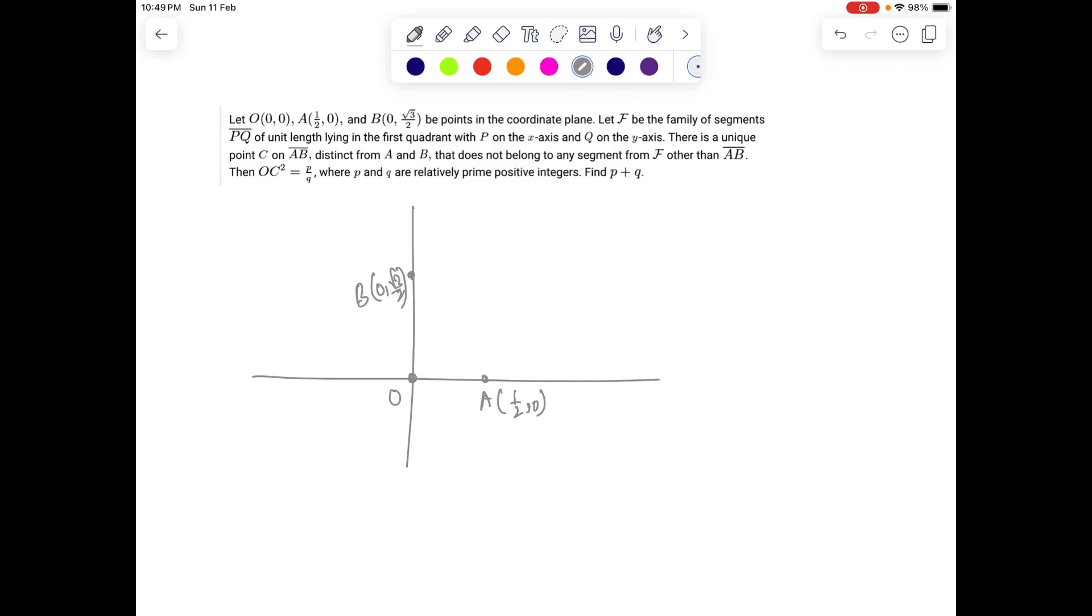So we have got three points: O, A at half comma zero, and B at zero comma root three by two. Let F be the family of segments PQ of unit length lying in the first quadrant with P on x-axis and Q on y-axis. There is a unique point C on AB, distinct from A and B, that doesn't belong to any of the segments from F other than AB. Then we need to find point C.